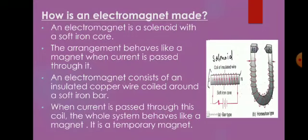It is called a temporary magnet because along with the current, the magnetism can also be switched off or on. As soon as the current through the coil is switched off, the magnetic property of the electromagnet also disappears. Depending upon the shape of the iron core, an electromagnet can be a bar electromagnet or a U-shaped electromagnet.